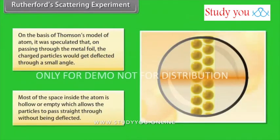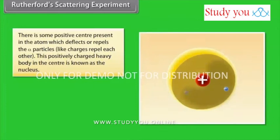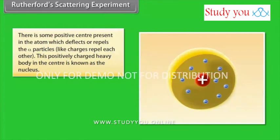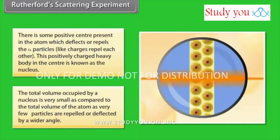Most of the space inside the atom is hollow or empty, which allows the particles to pass straight through without being deflected. There is some positive center present in the atom which deflects or repels the particles. Like charges repel each other. This positively charged heavy body in the center is known as the nucleus. The total volume occupied by a nucleus is very small as compared to the total volume of the atom as very few particles are repelled or deflected by a wider angle.